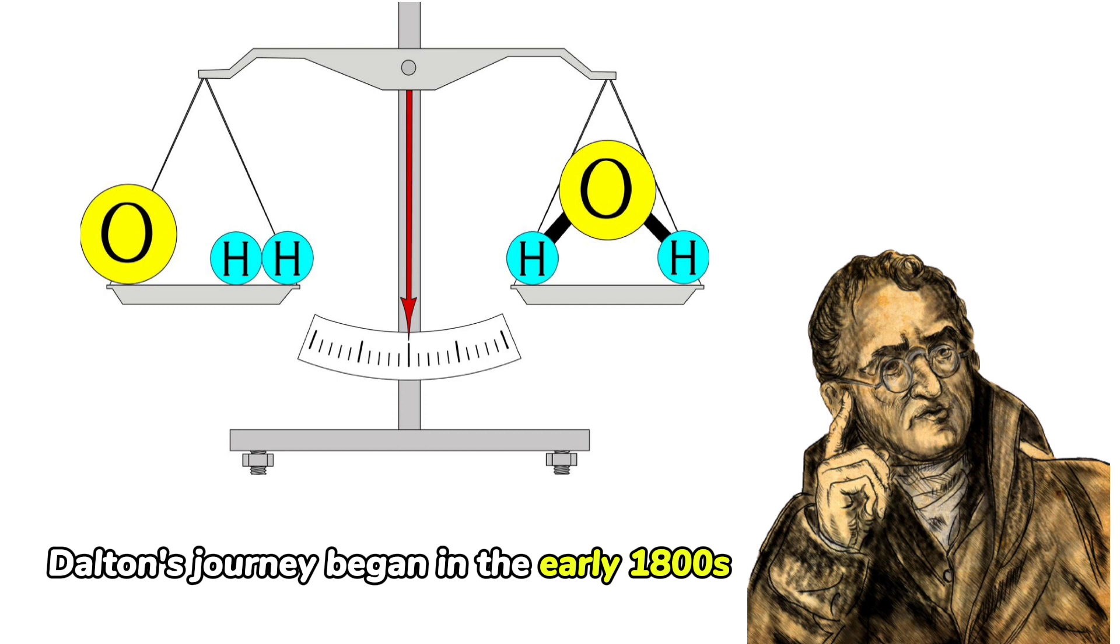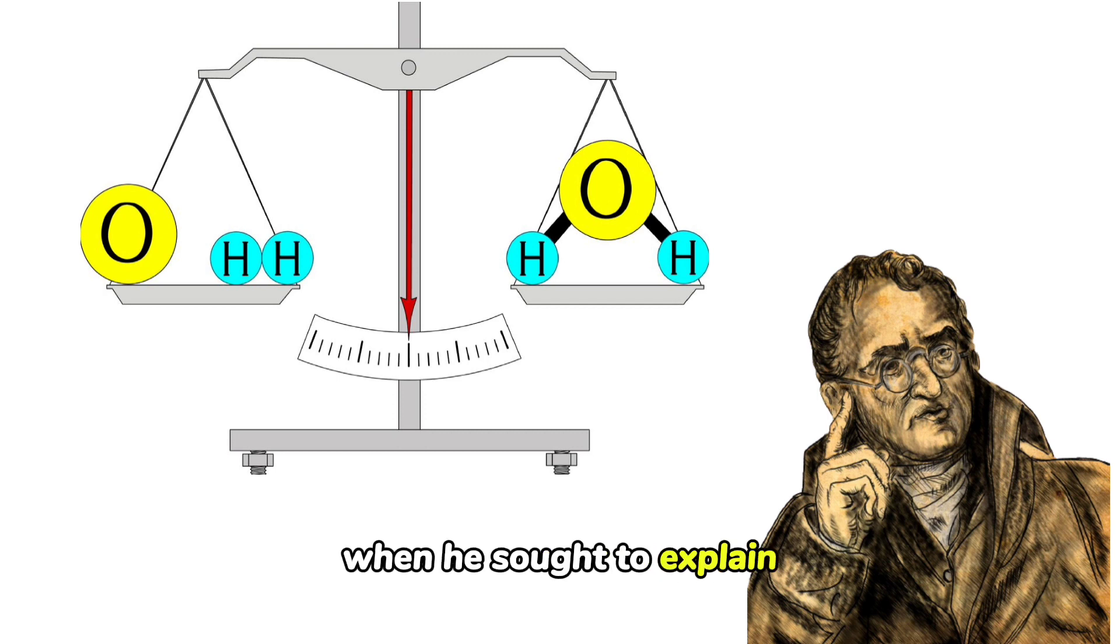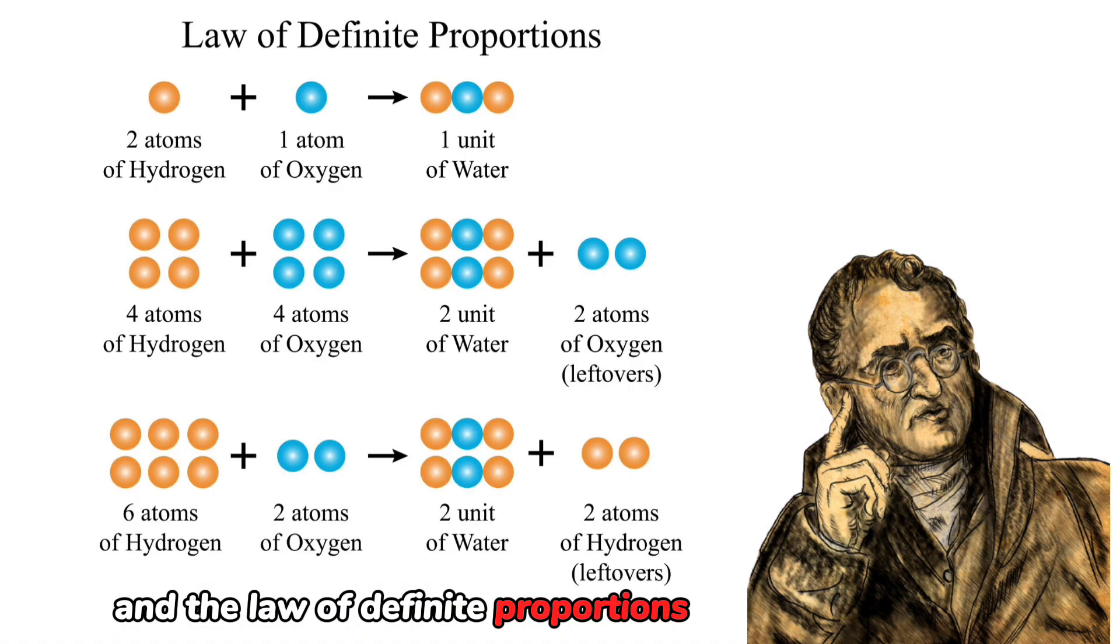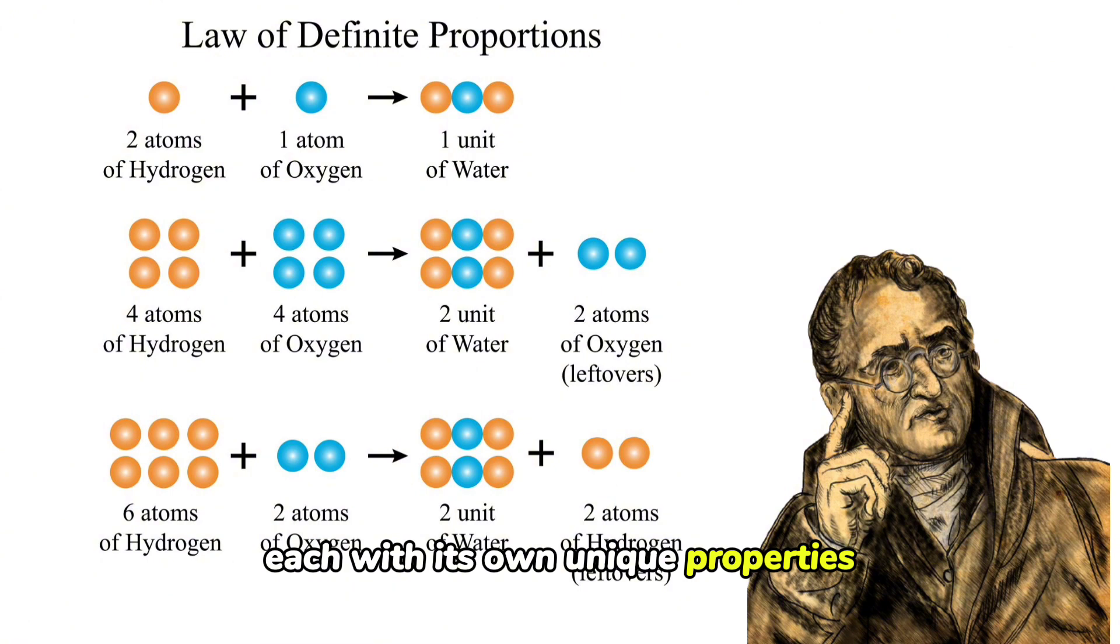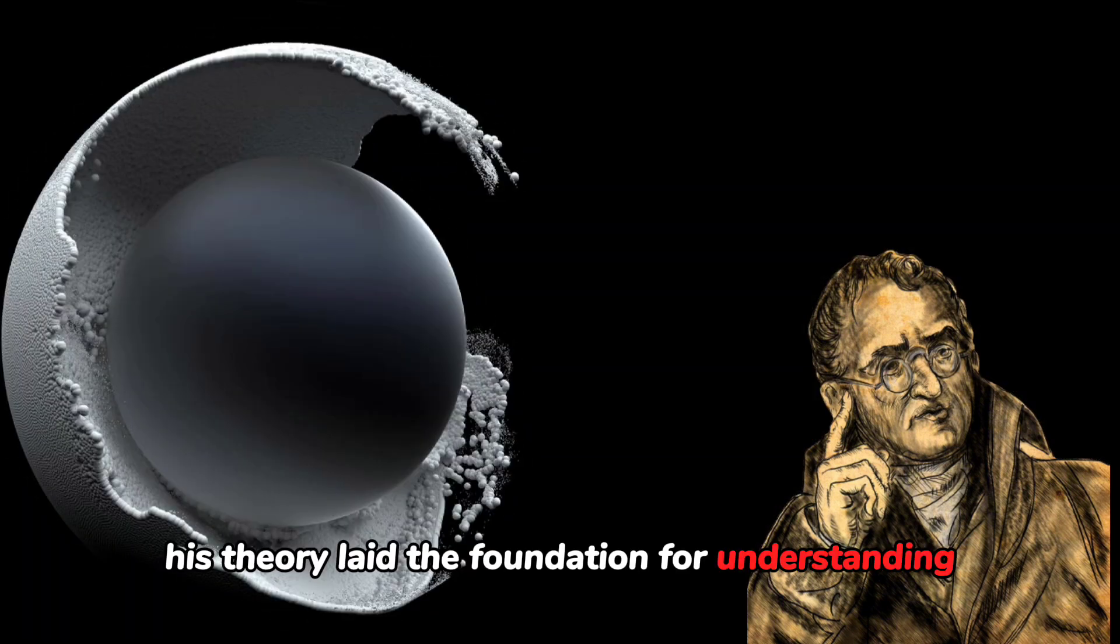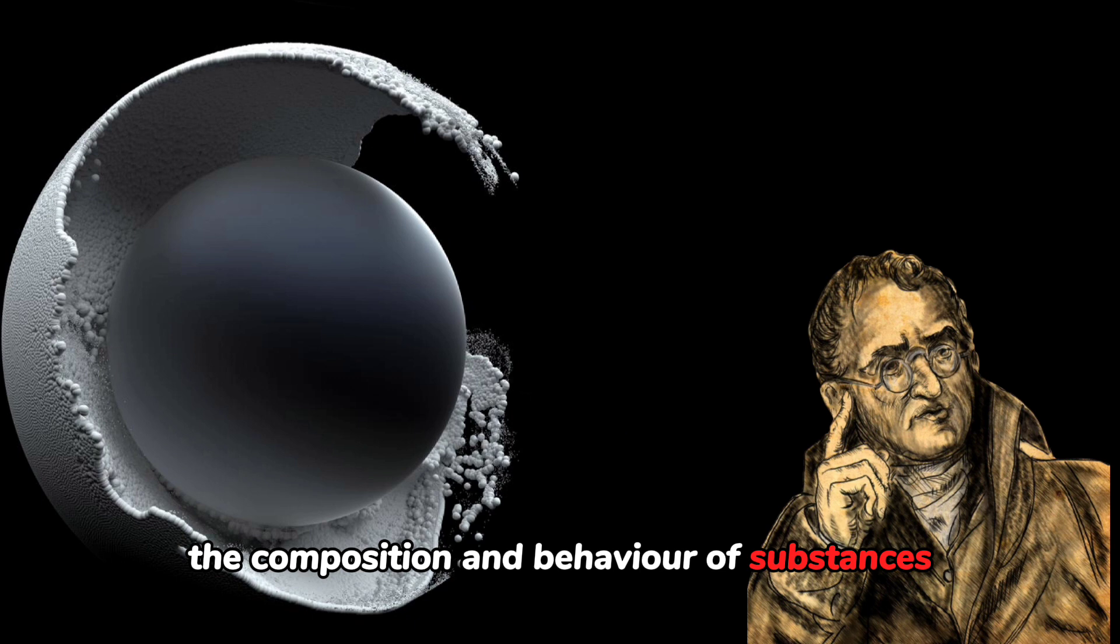Dalton's journey began in the early 1800s when he sought to explain the law of conservation of mass and the law of definite proportions. He proposed that all matter consists of atoms, each with its own unique properties. His theory laid the foundation for understanding the composition and behavior of substances.